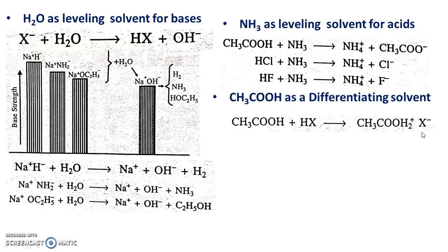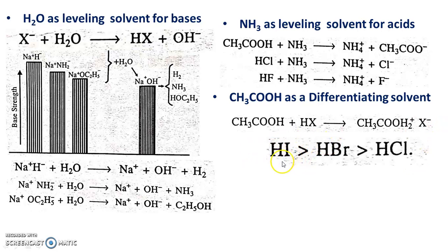Water is a leveling solvent for acids like HCl, HBr, and HI — that was already discussed. To differentiate the relative strength of these acids, a much weaker acid like acetic acid is taken as a reference solvent. In acetic acid, we can distinguish the strength of HI, HBr, and HCl. So acetic acid is a differentiating solvent for these acids, and the acid strength follows the order: HI > HBr > HCl.